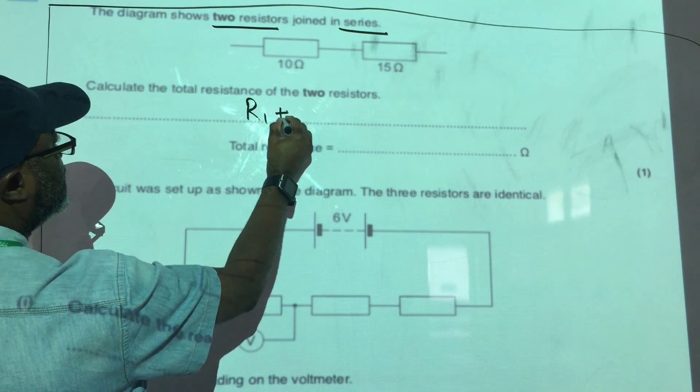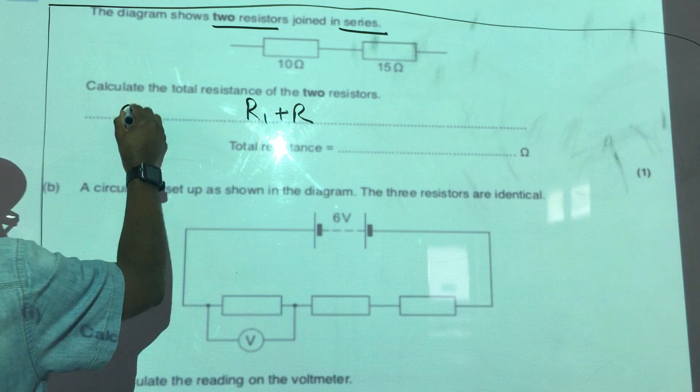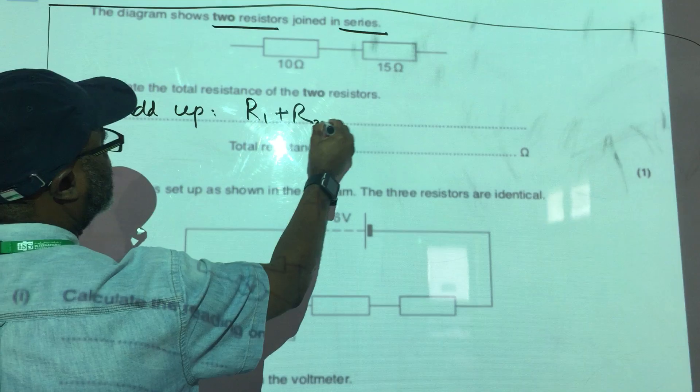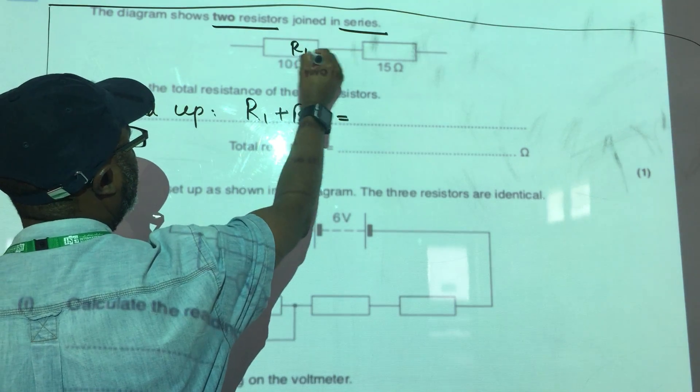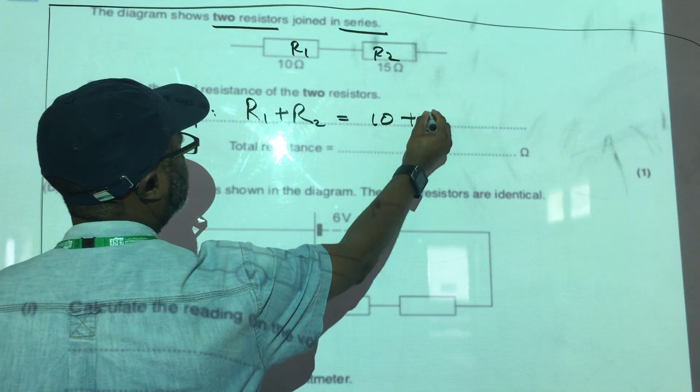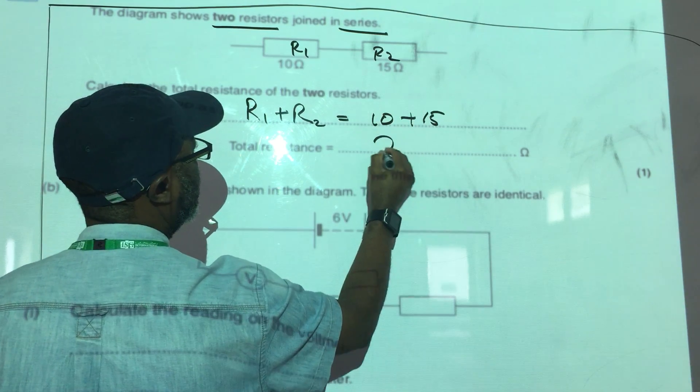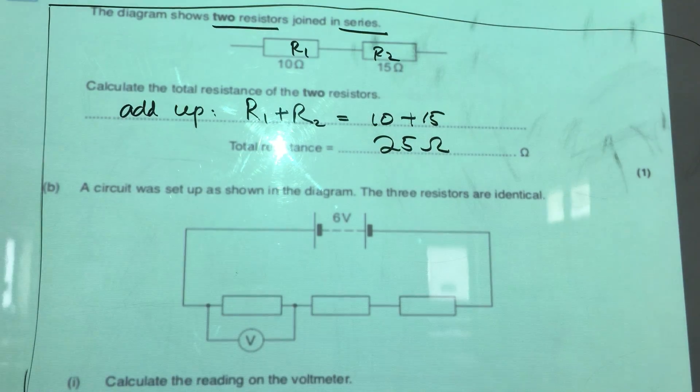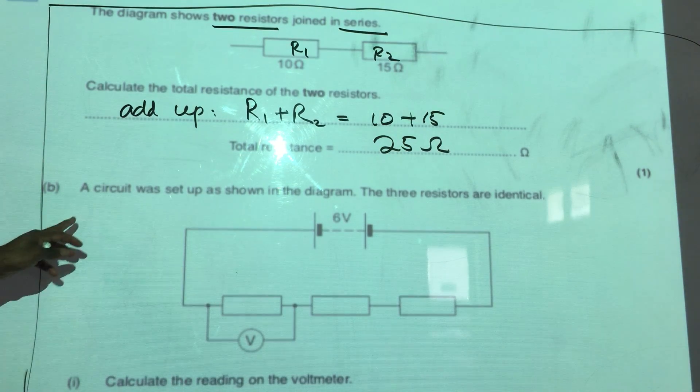When resistors are joined in series, you add them up. So if that is R1 and that is R2, you are left with 10 plus 15, and that will be 25 ohms. Now, the second part of the question: the circuit was set up as shown in the diagram.